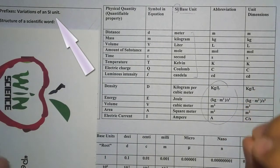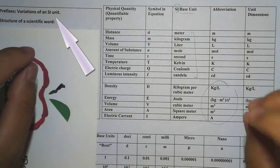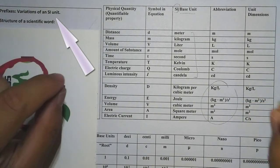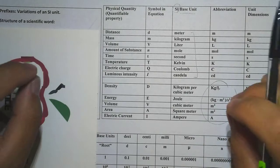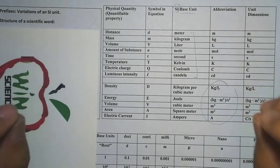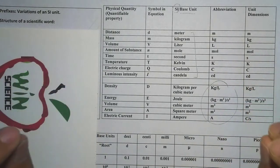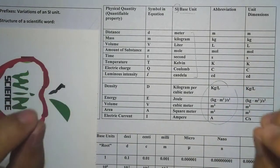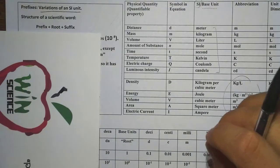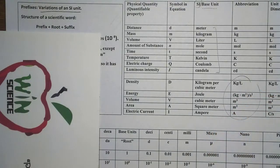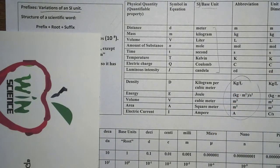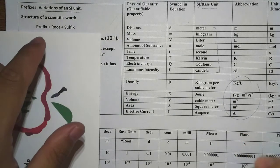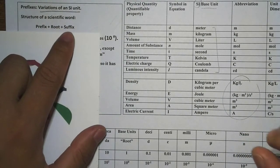In this lesson, we are going to learn the variation of an SI unit — basically, how do we make different units from the same SI unit? The way we create new variations from the same SI unit is by using the structure of a scientific word.